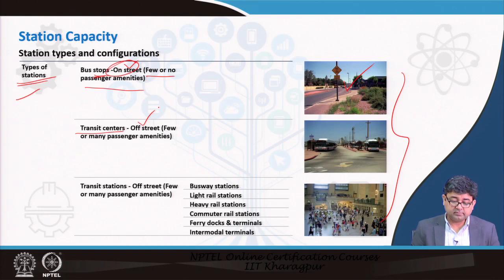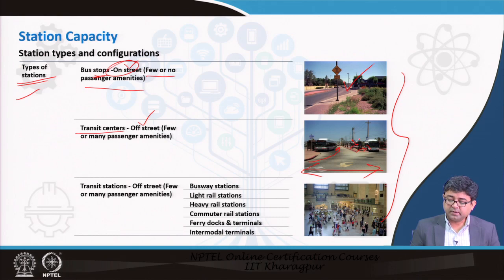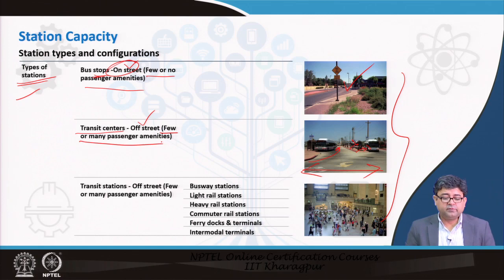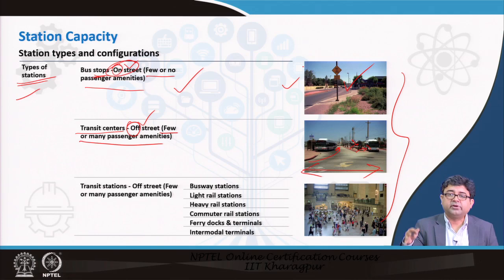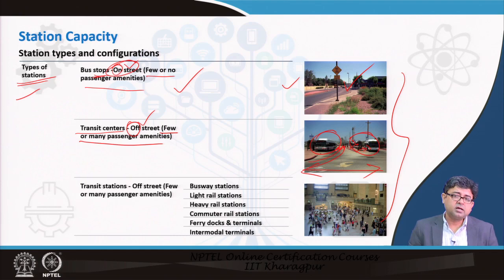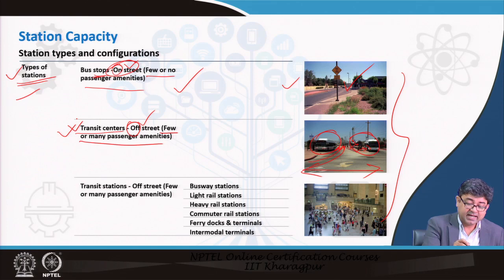The next one is what is called a transit center. These may be off-street: the main street is here and there may be a transit center off-street where buses can queue one behind the other and people can get on and off from platforms that have been developed. They may have some passenger amenities — a little bit more than what a bus stop has. Because they are off-street, the number of buses that can be accommodated at transit centers is a little bit higher.